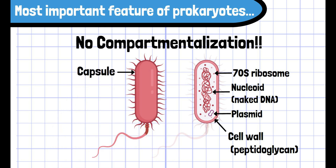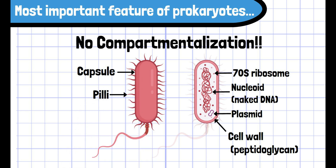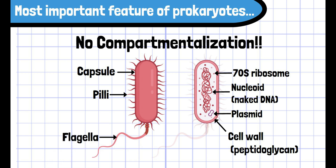The outermost part is surrounded by a capsule, which provides protection to prokaryotes. Prokaryotes also have pili, which give adhesion with other cells during sexual reproduction, and a flagellum, which provides propulsive force to the organism.